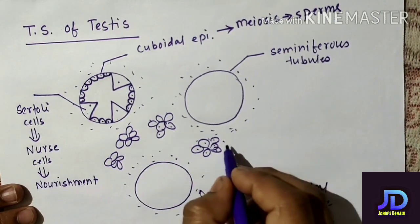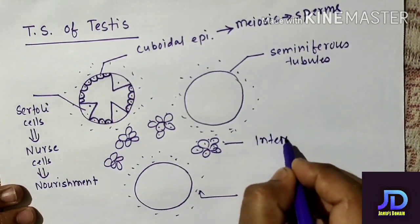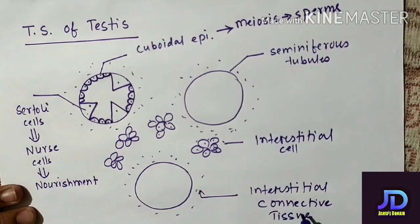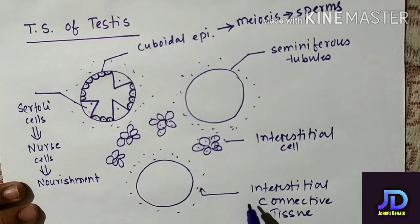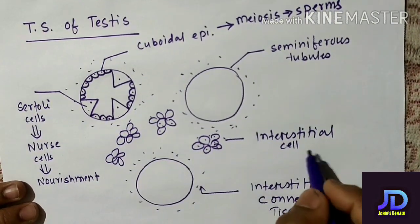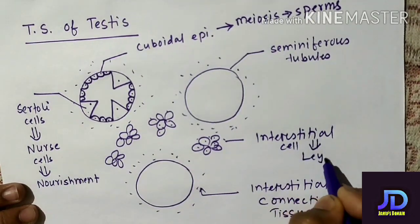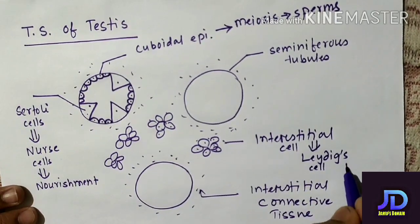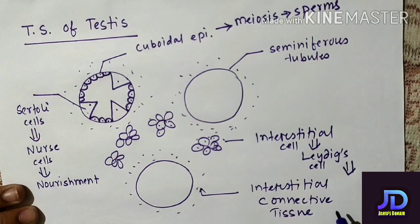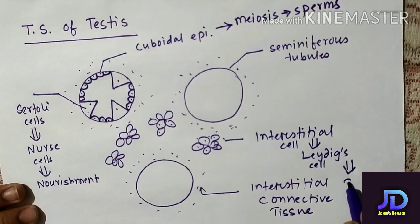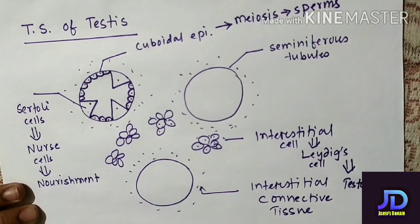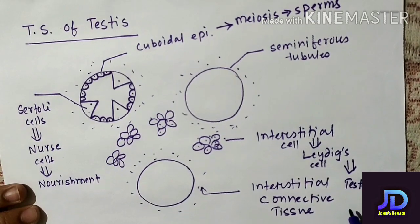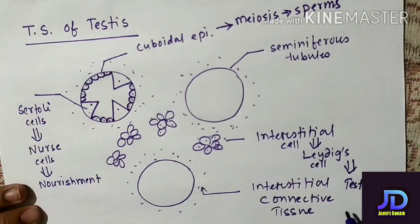In the interstitial connective tissue there are some cluster of cells called interstitial cells. They are also called Leydig cells. This cell is primarily responsible for the formation of the male sex hormone, that is testosterone, for which the secondary sexual characters appear in an adult male body.